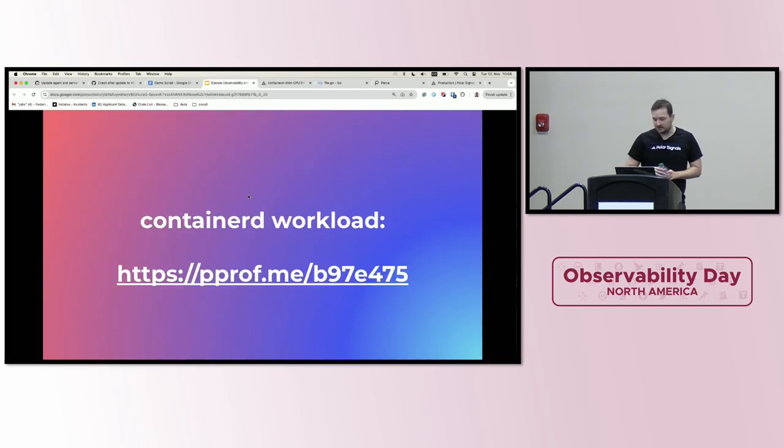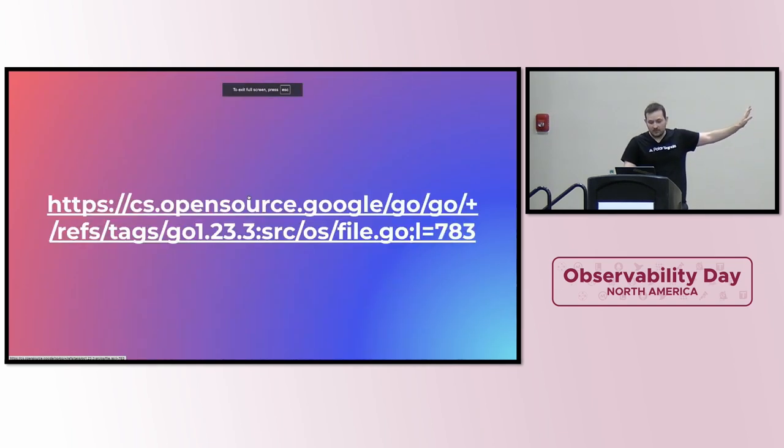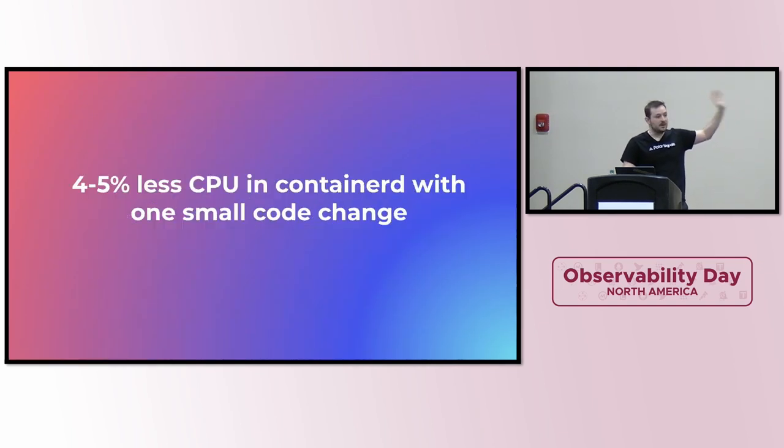Okay, I have three minutes, so I'm going to try to run through the other examples. Bottom line is, I'm going to skip over how we optimize this, but bottom line is this basically improved Containerd for all installations on the planet. This is a workload that runs probably millions of times, right? This one very tiny code change improved it by almost five percent. And so if we keep doing this, we can definitely squeeze out way more out of our existing hardware.